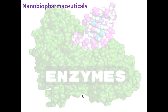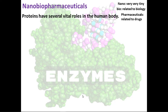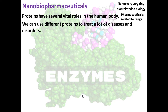Now that we're finished with enzymes, let's talk about something very new in science: nano-bio-pharmaceuticals. Nano means very tiny, bio relates to biology, and pharmaceuticals relates to drugs and pharmacy. Proteins have several vital roles in the human body, as we just discussed, because enzymes — 100% of which are made up of proteins — are very important to maintain and organize our vital activities. So we can use different proteins to treat a lot of diseases and disorders.